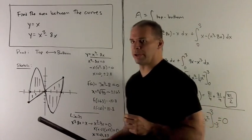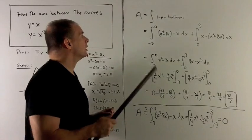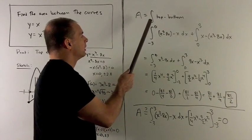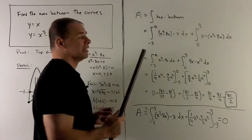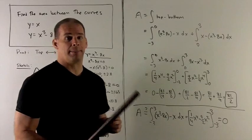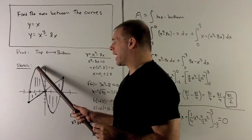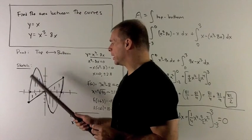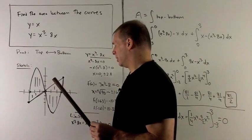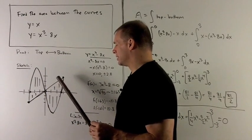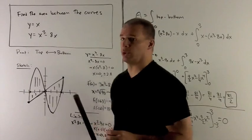Now I'm ready to do some integrating. So our area formula, integral top minus bottom. In this case, remember, top and bottom are going to switch as we move across. So in the negative region for x, top is the cubic, bottom's the line. On the positive region for x, top is the line, bottom's the cubic.